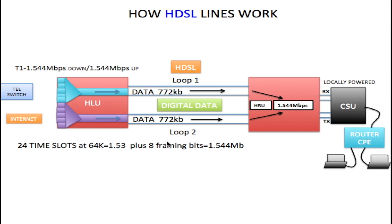What we're missing is 8 framing bits. In order to get the information from one end to another, it has to be in a frame — 8 bits are used as a frame for that data, and that's how we get 1.544 megabits per second. We could use every slot for a telephone line, or we can divide it up: three slots for telephone, three or four slots for the internet, and other slots for other purposes. HDSL is very versatile, which is one of the attractive things about this line. That's why many businesses today are still using the T1 HDSL line to transport data from one point to another.